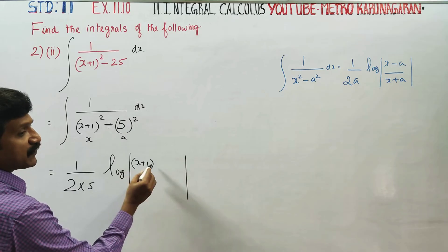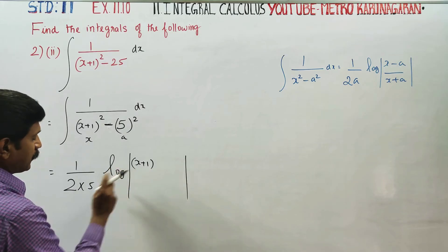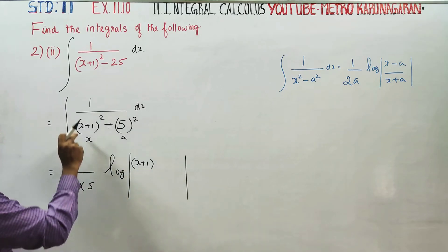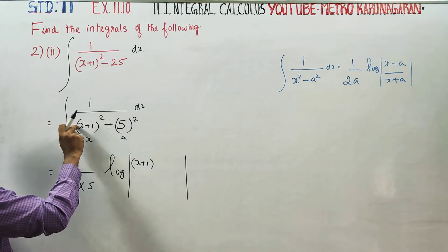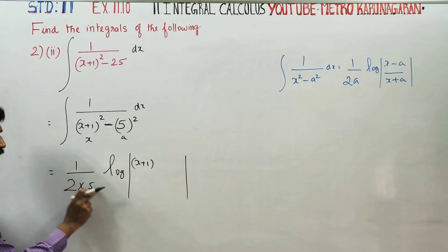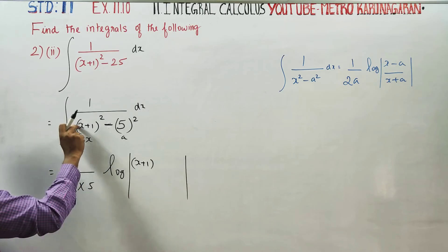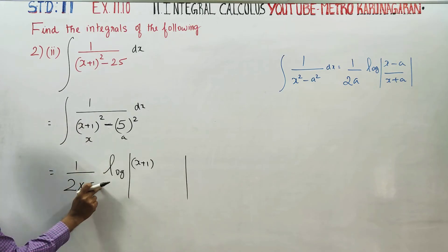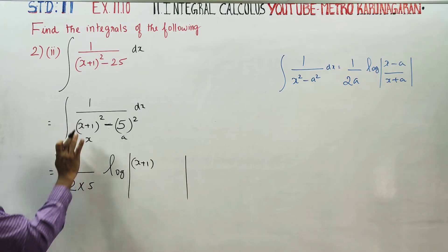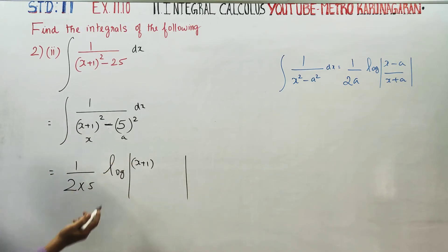Since (x plus 1) is a linear function of x, the number in front of x does not need to go to the denominator. For example, if 5 comes it goes by 5, if 7 comes it goes by 7. But here there is no such number, so we just apply directly.